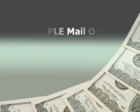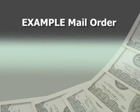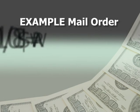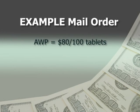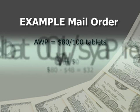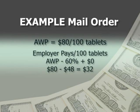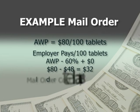Let's move over to mail order and take this same prescription to make a point. We're going to compare apples to apples in every situation. The AWP is still $80, same as in the retail pharmacy. We're going to talk about a 100-tablet sample. The PBMs typically say we'll give you AWP minus 50% in retail, but we'll give you 60% if you take it to mail — another 10%. We're going to compare it month to month to get a fair comparison.